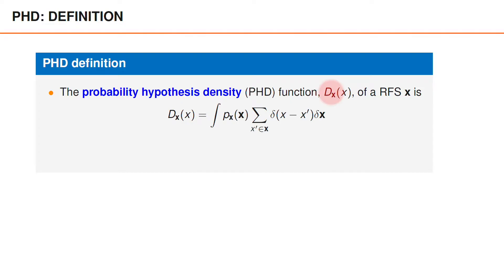One way to define the PHD of a random finite set boldface x for a vector x is as the set integral of the multi-object PDF of the set x, times a summation over all the elements x' in the set x of the Dirac delta function of x minus x', where x is the argument in the PHD function. This integral can also be viewed as the expected value of the summation.